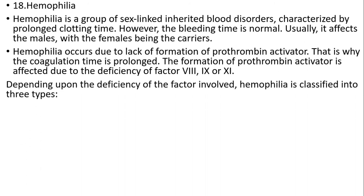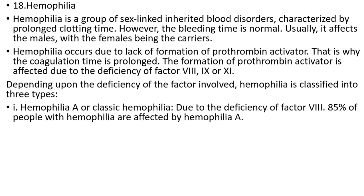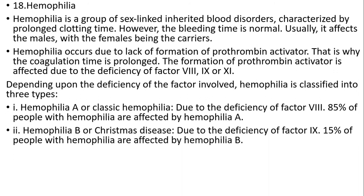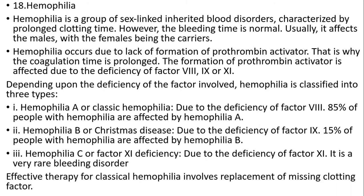Depending upon the deficiency of the factor involved, haemophilia is classified into three types: haemophilia A or classic haemophilia, due to deficiency of factor 8 — 85% of people with haemophilia are affected by this type. Haemophilia B or Christmas disease, due to deficiency of factor 9 — 15% are affected. Haemophilia C or factor 11 deficiency — due to deficiency of factor 11, it is a very rare bleeding disorder. Effective therapy for classical haemophilia involves replacement of the missing clotting factor. Thank you.